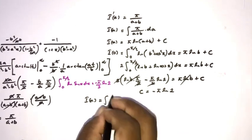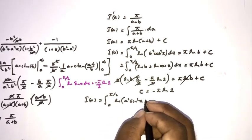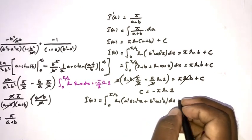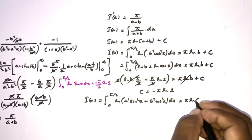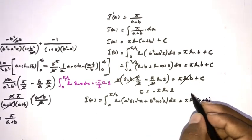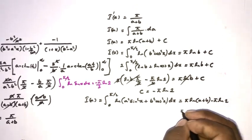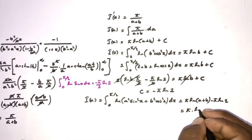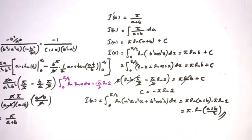Therefore our final answer is: ∫₀^(π/2) ln(a²sin²x + b²cos²x) dx = π·ln(a + b) - π·ln(2) = π·ln((a + b)/2). If you like this type of video, please subscribe to this channel. Thank you for watching.